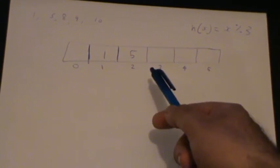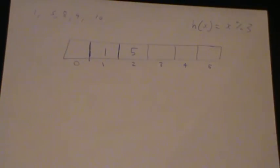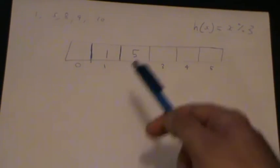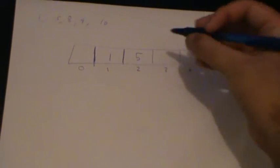So that means we need to use, if we're using the linear probing method, we'll just put 8 in the next available slot.